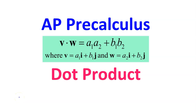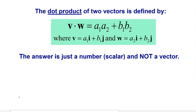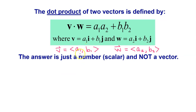In this video, I will show you how to find the dot product of two vectors, and I'll show you how to use that dot product to find the angle between two vectors, and thus determine whether two vectors are parallel or perpendicular, also known as orthogonal. The dot product of two vectors V and W is given by this formula. A dot product is just a number, called a scalar, and not a vector.